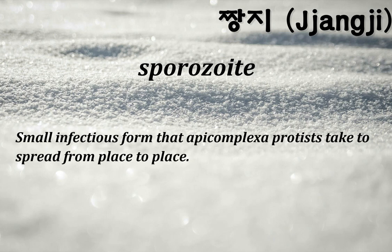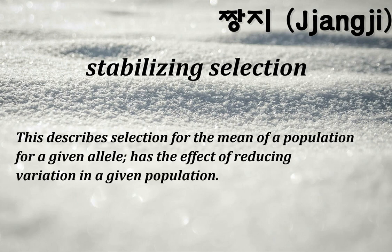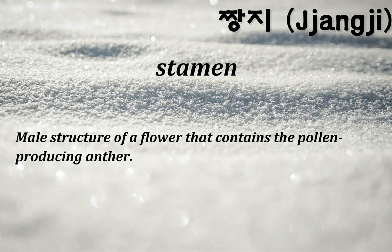Sporophyte: the diploid multicellular stage of the plant life cycle. Sporozoite: small infectious form that Apicomplexa protists take to spread from place to place. Stabilizing selection: describes selection for the mean of a population for a given allele; has the effect of reducing variation in a given population. Stamen: male structure of a flower that contains the pollen-producing anther.